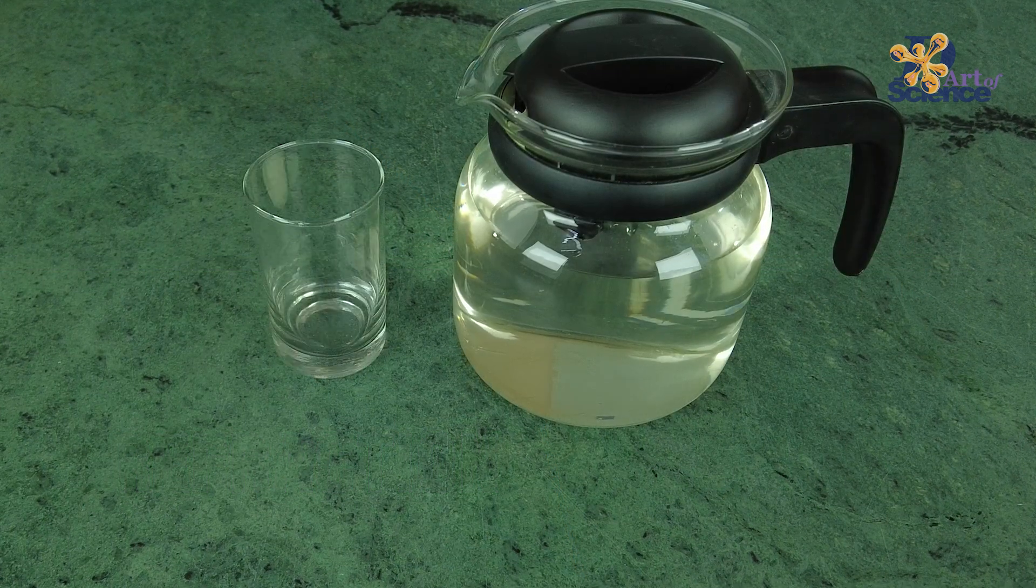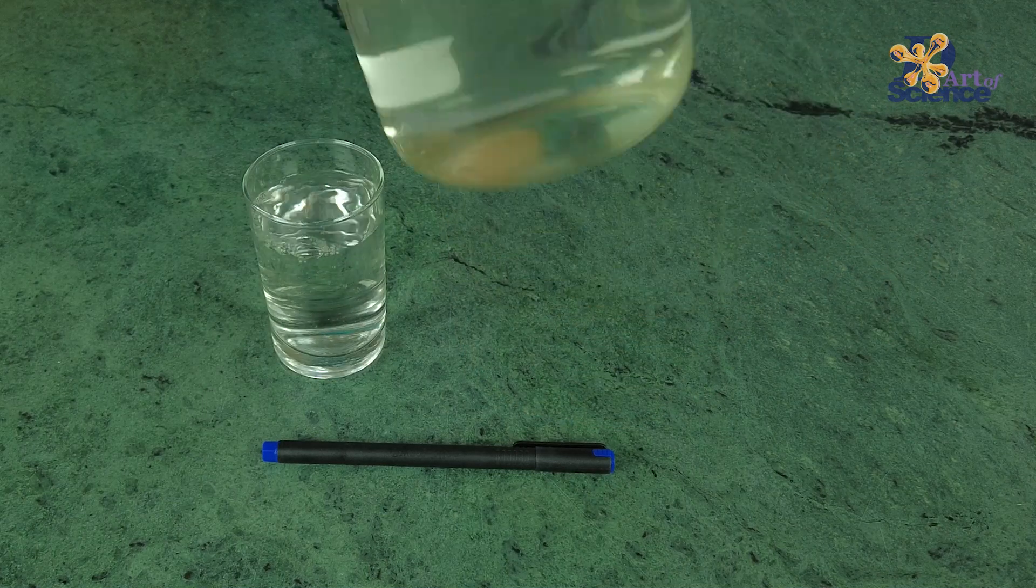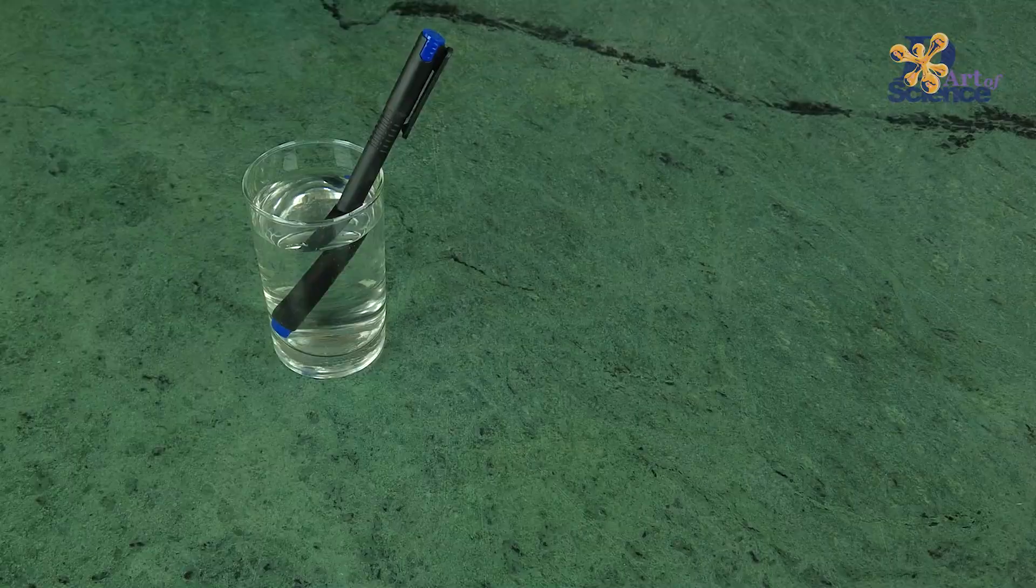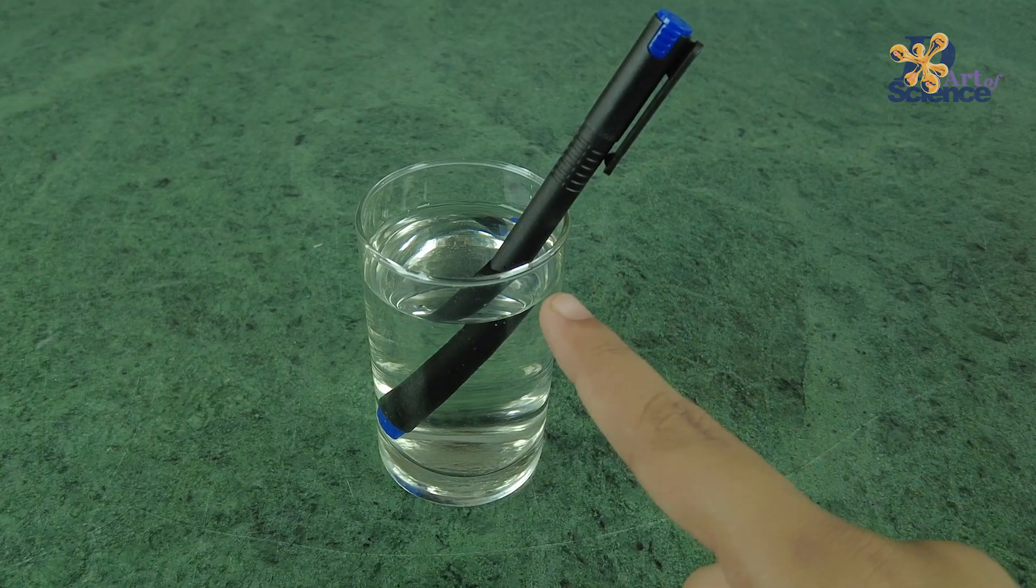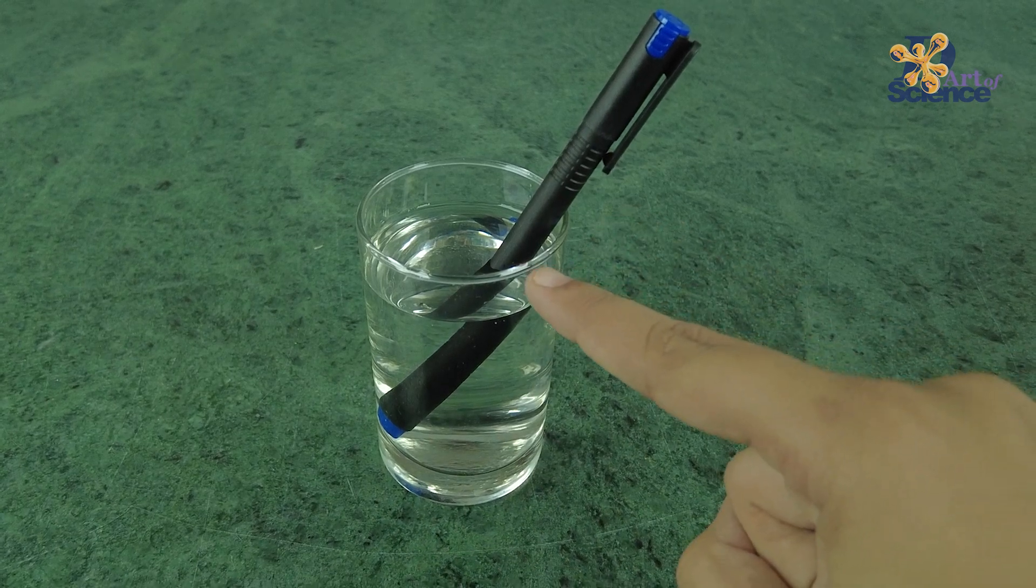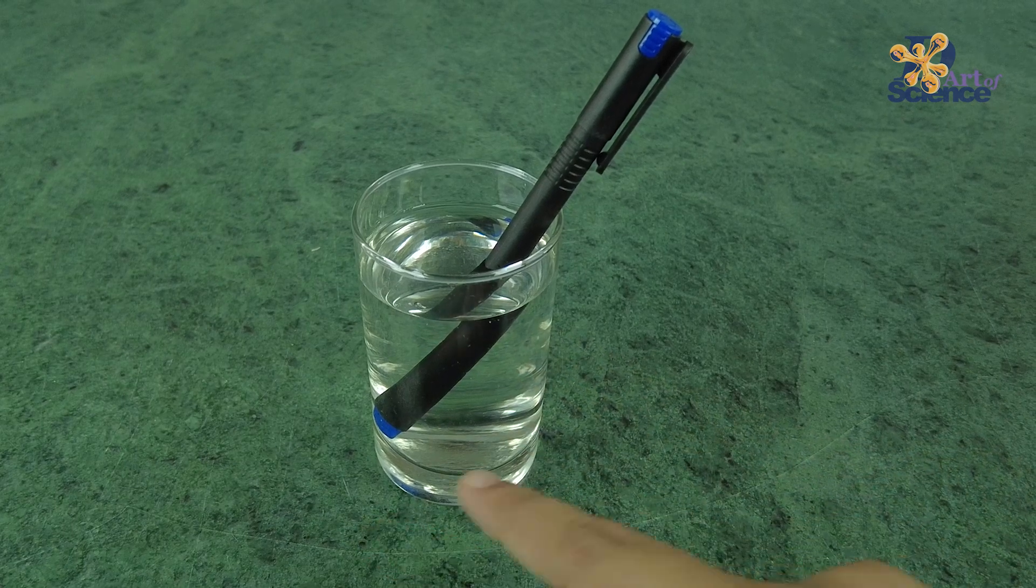Let's understand this with an experiment. All you need is some water, a glass, and a pen or a pencil. Fill the glass with water and put the pen inside. And now observe this. You see, it appears as if the pen has bent while traveling from air to water. There is a break right here in the middle. And this happens because of the bending of light.